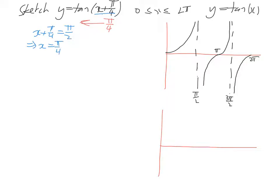So we're going to have our first asymptote at pi on 4. We know that our period, t, for a normal tan graph, is pi.